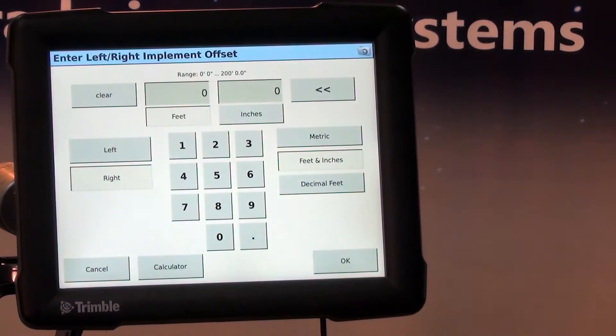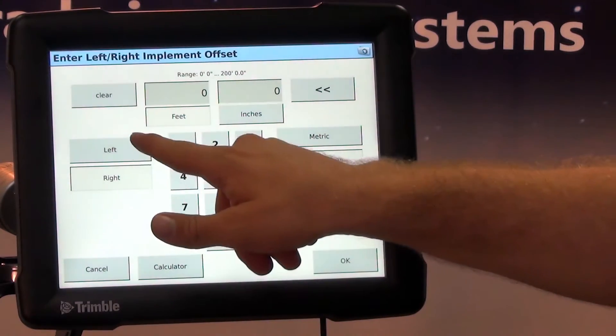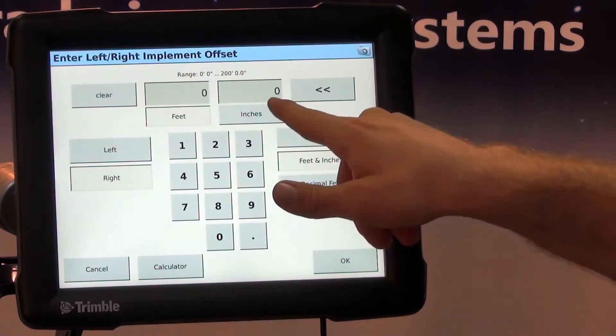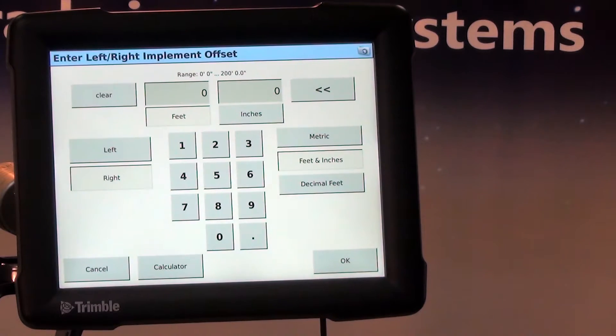We hit that box and we can tell if we want to go left or right, and we can tell in feet and inches how much.